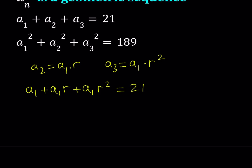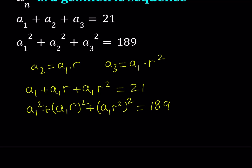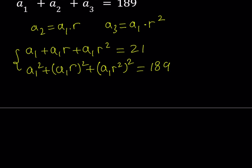The second equation can be written as a_1 squared plus (a_1·r) squared plus (a_1·r²) squared. Note that a_sub_2 and a_2 mean the same thing. So the second equation becomes a_1² plus a_1²·r² plus a_1²·r⁴ equals 189.